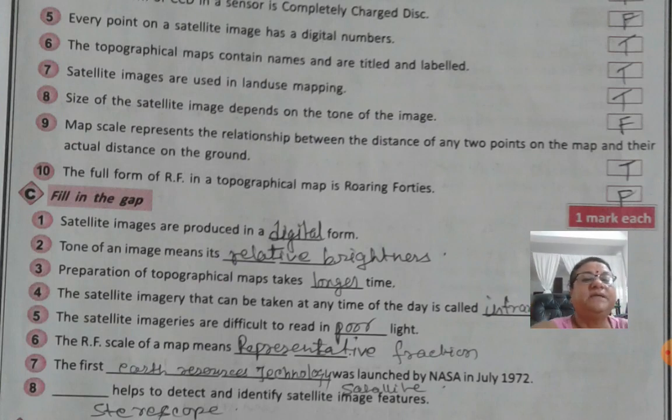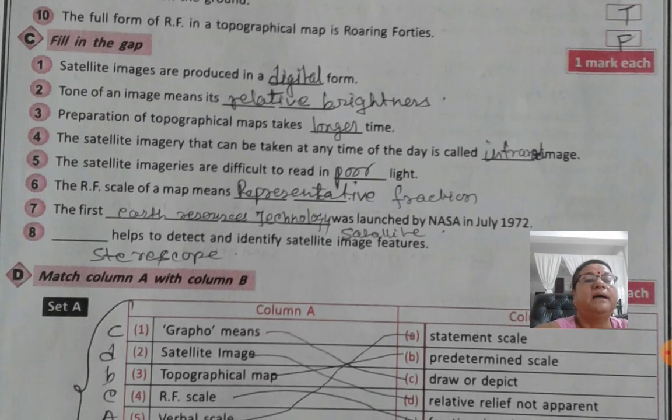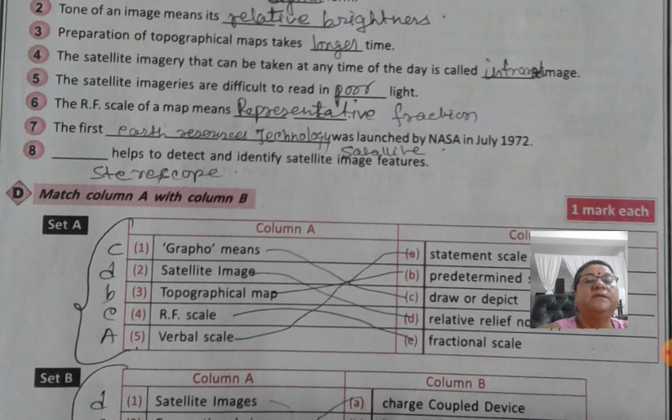Next question, that is fill in the blank. Satellite images are produced in a digital form. The tone of an image means its relative brightness. Preparation of topographical maps takes longer time. The satellite imagery that can be taken at any time of the day is called infrared images.